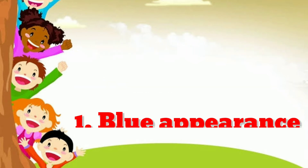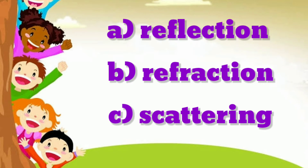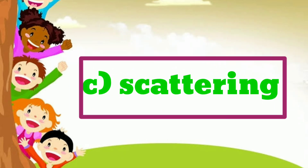First question: the blue appearance of the sky is due to dash of light. The given options are option A, reflection; option B, refraction; option C, scattering. We know very well the blue appearance appears by the scattering of light. So the answer is option C, scattering.